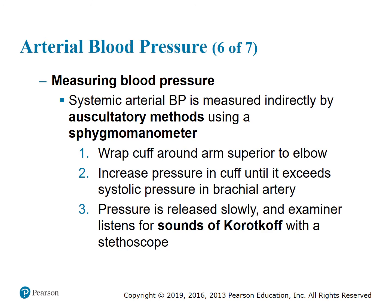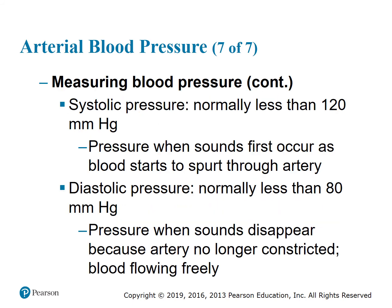Systemic arterial blood pressure is measured indirectly by auscultatory methods using a sphygmomanometer — wrap the cuff around the arm superior to the elbow, increase cuff pressure until it exceeds the systolic pressure in the brachial artery, then release slowly while listening for Korotkoff sounds with a stethoscope. Systolic pressure is normally less than 120 mmHg — the pressure when sounds first occur as blood starts to spurt through the artery. Diastolic pressure is normally less than 80 mmHg — the pressure when sounds disappear because the artery is no longer constricted and blood flows freely.